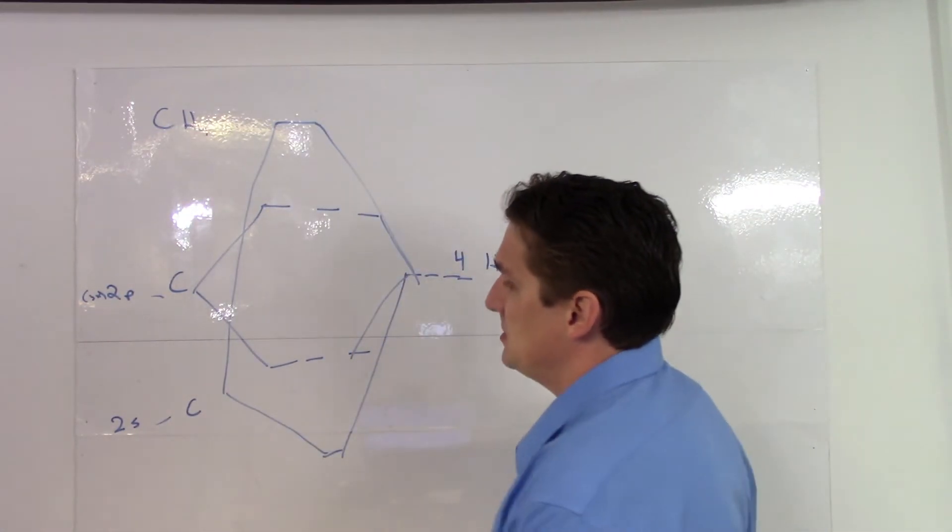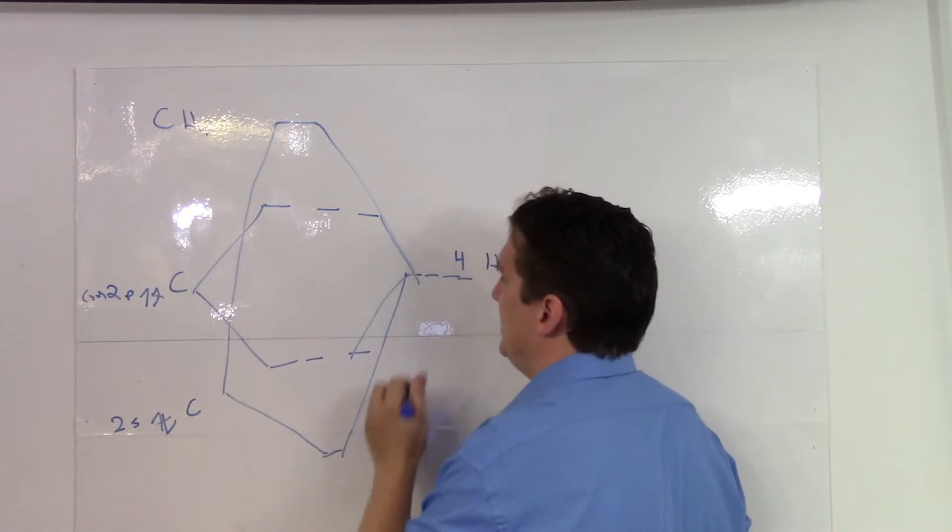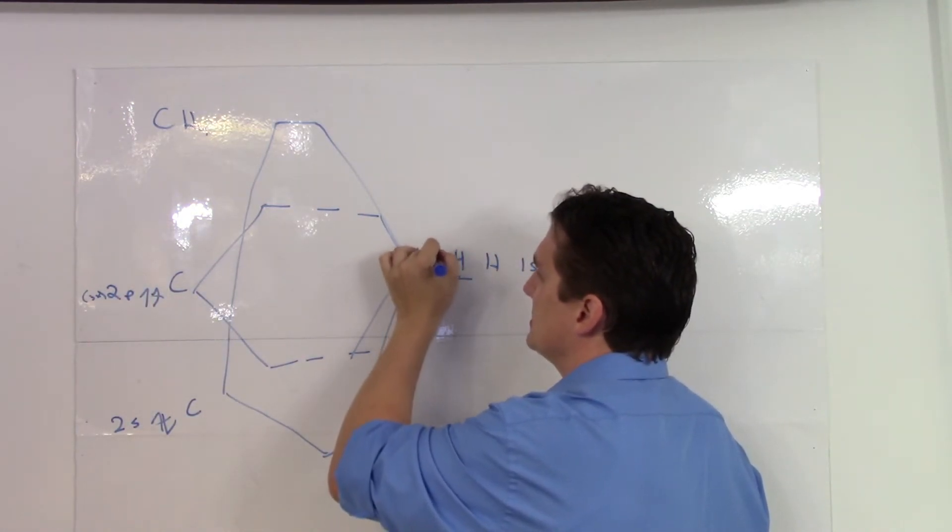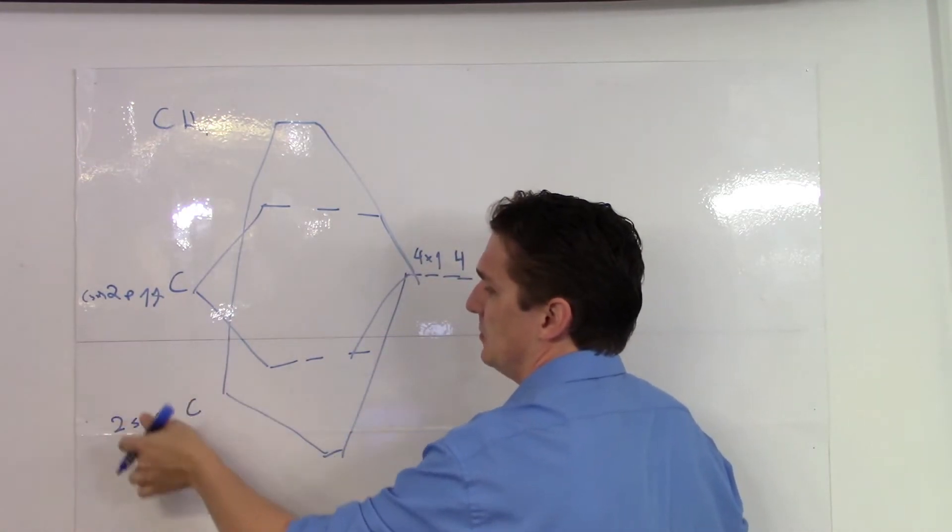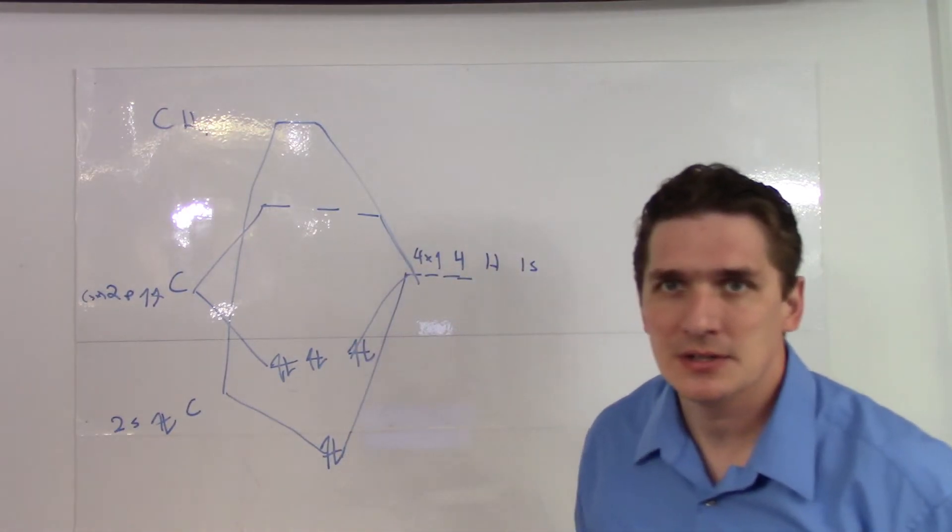Now in terms of carbon, it's got two 2S's, it's got two P's. There are four electrons in each hydrogen. So that gives us eight electrons.